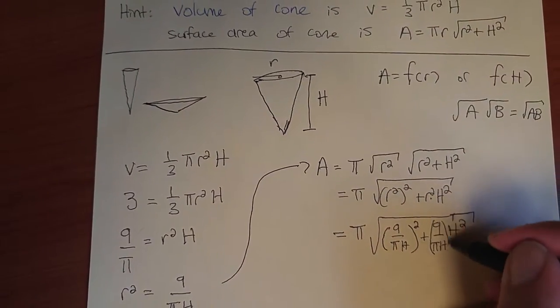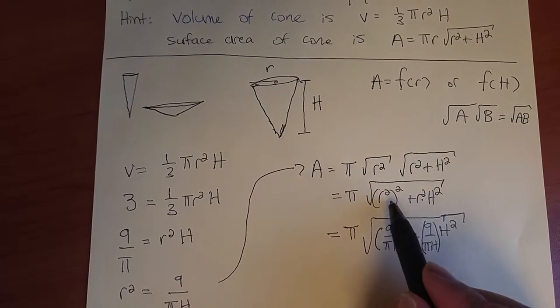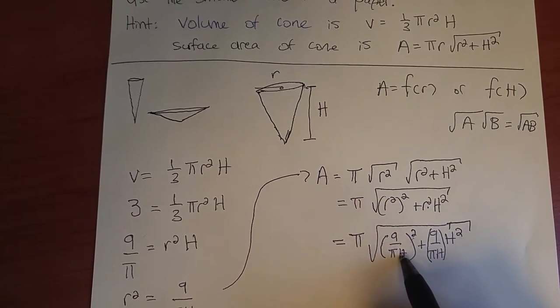We'll replace this r² with 9/(πh). Put brackets around there to make it more clear that that's the same thing as the r². And we replace the r² with 9/(πh), but it was r² squared, so this (9/(πh)) is all squared.